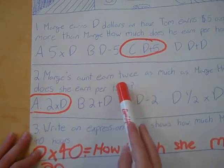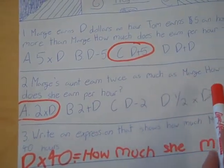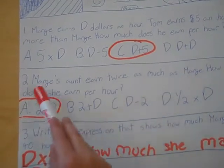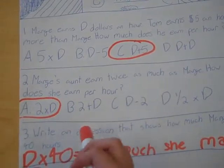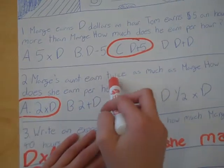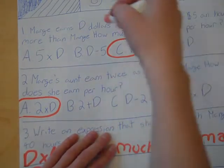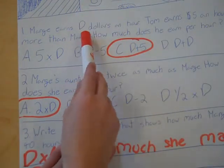Marge's aunt earns twice as much as Marge. How much does she earn per hour? It will be $2.00 because it says twice as much as Marge. Marge earns D dollars an hour.